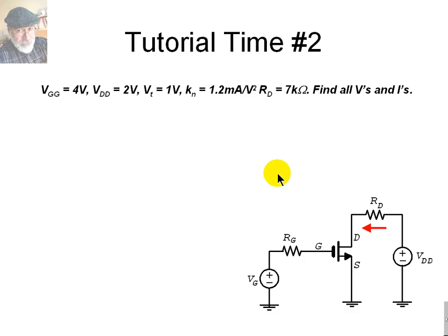Second tutorial exercise. The same circuit, but now the voltages have changed for the sources. VGG, this one is 4 volts, and VDD, this one, is only 2 volts. The transistor is the same given by the same VT and the same KN. The resistances have not changed. Find V and find I for the transistors, DS and GS.